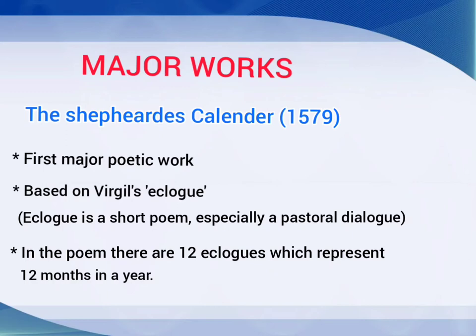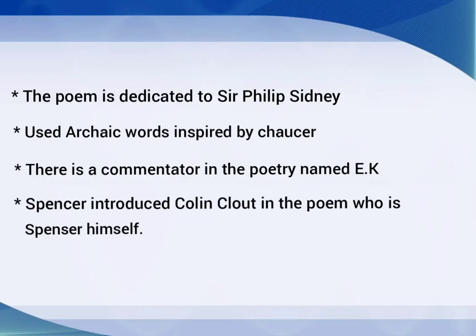Now let's discuss some of the major works of Spenser. The first important work is The Shepherd's Calendar, which was published in 1579. It is the first major poetic work. The work is based on Virgil's Eclogue. An eclogue is a short poem, especially a pastoral dialogue. In the poem, there are 12 eclogues which represent 12 months in a year.